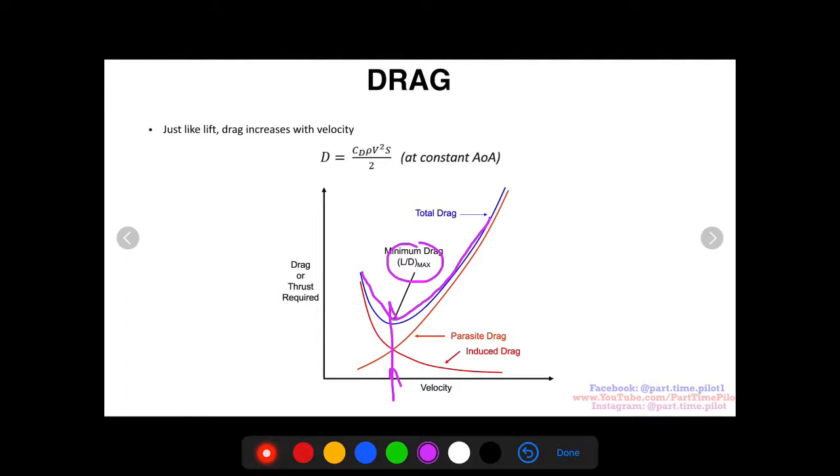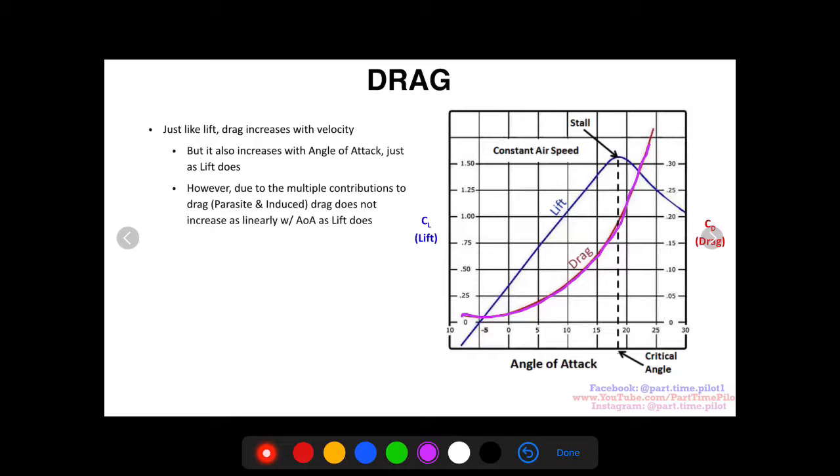And the reason why that happens is because drag has, there's both parasite drag and induced drag. And that parabolic increase in drag gives us those points of efficiency that we can target as engineers and pilots to be the most efficient while we fly. Okay. Thanks guys.